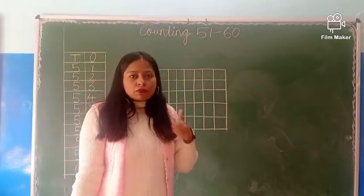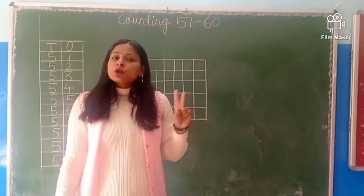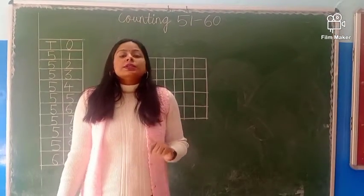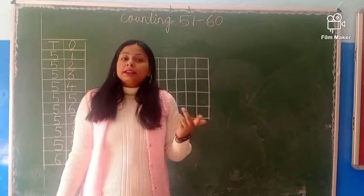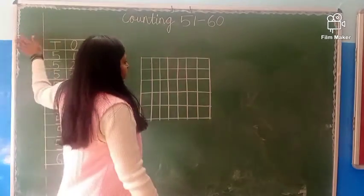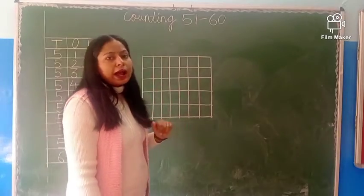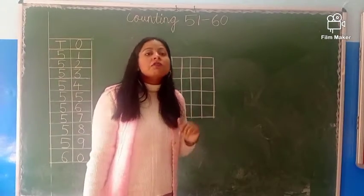And till now we have done 1, O-N-E, and 2, T-W-O. So then 2 ke baad kya aata hai? 3. So next page me again date daalenge and number names likhenge. And now we have to write 3.